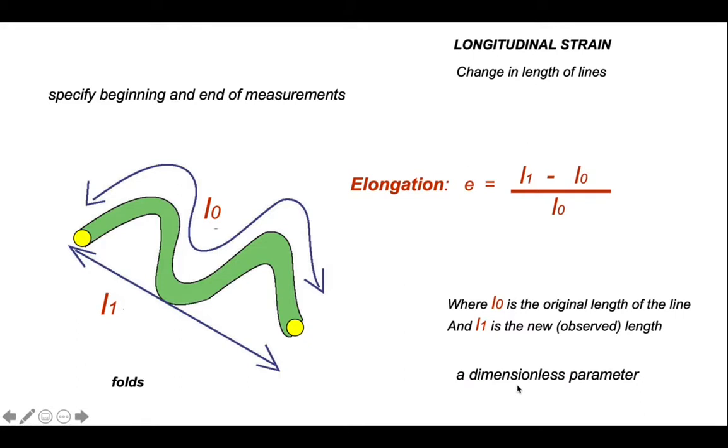We're interested in the change in length, so the difference between L1 and L0, but by dividing by the original length, we create a parameter elongation that has no dimensions. That means it's scale invariant. We can compare estimates that we get on a small scale with those on a large scale. For example, if we wanted to see whether the strain was homogeneous through different scales of observation.